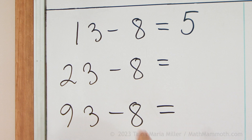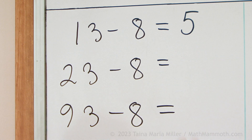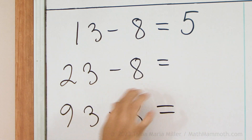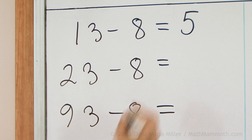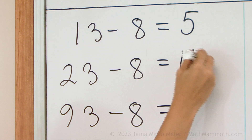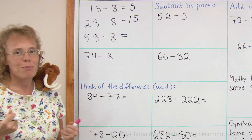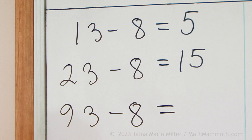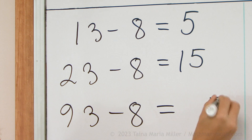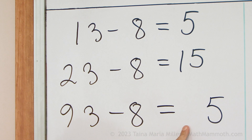Notice 13 minus 8 — think of it this way: it goes to the previous 10 and is 5. Similarly, 23 minus 8 will also go down to the previous 10, which is just one 10, and it ends in 5. That's how I think about it personally. 93 minus 8 also will end in 5, but instead of 90 it will be the previous 10 — 80 something.